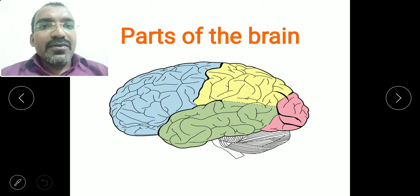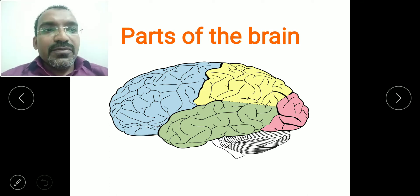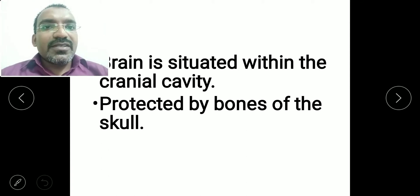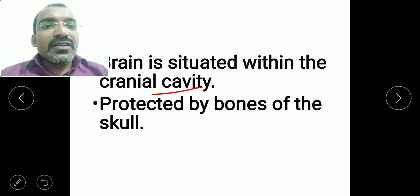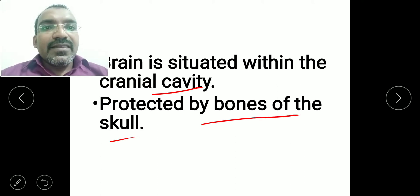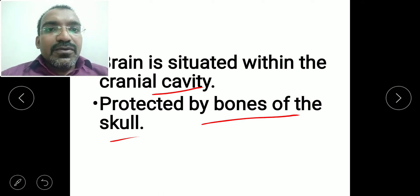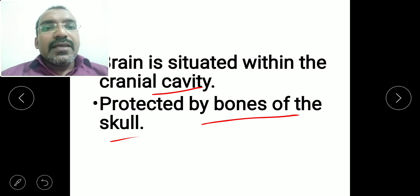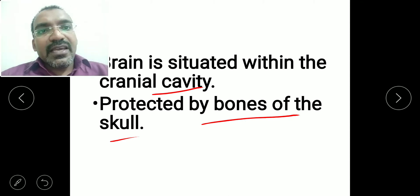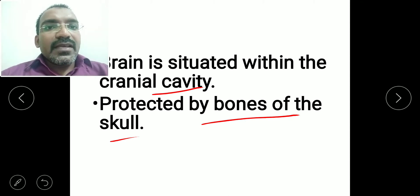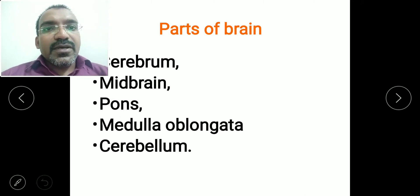The brain is an organ situated within the cranial cavity, protected by bones of the skull — specifically the frontal bone, parietal bone, occipital bone, temporal bone, sphenoid bone, and ethmoid bone. These are the bones of the cranium, and the brain is protected from all sides by them.